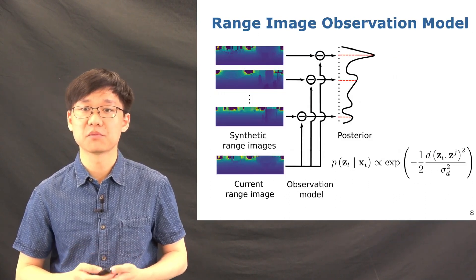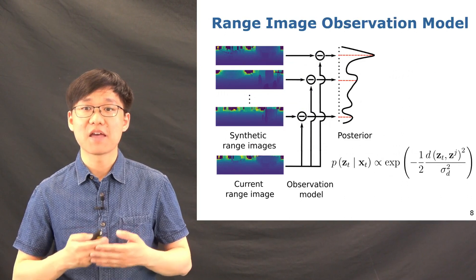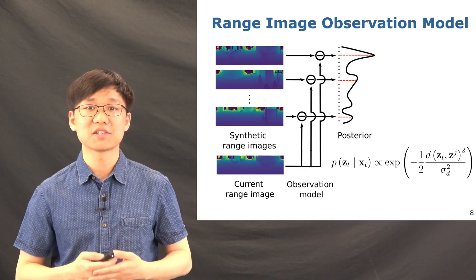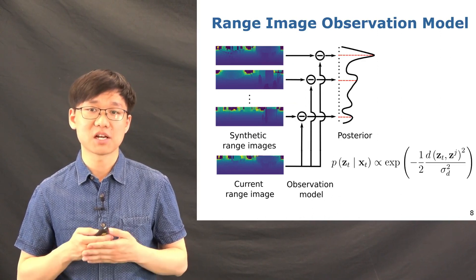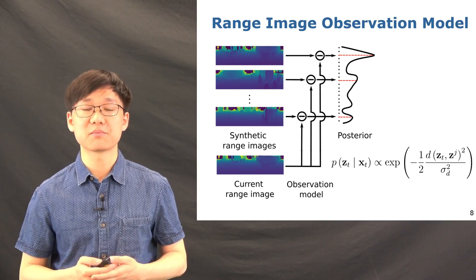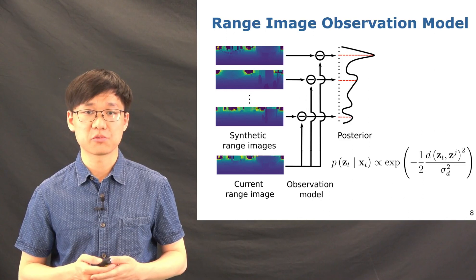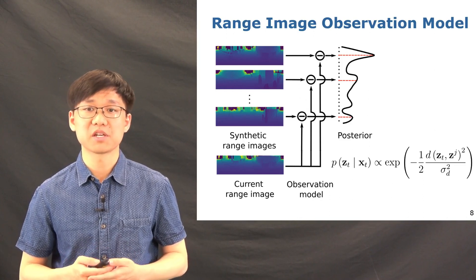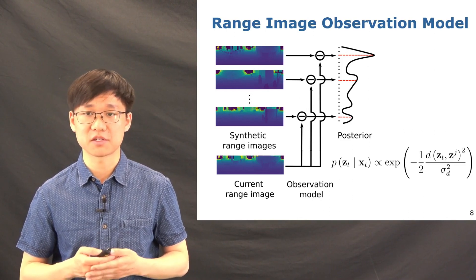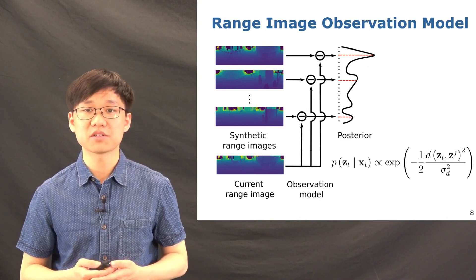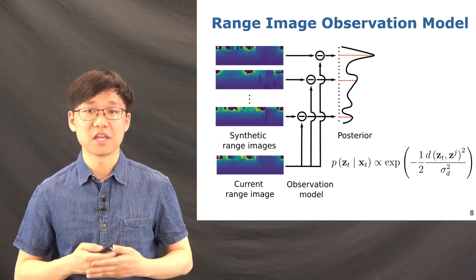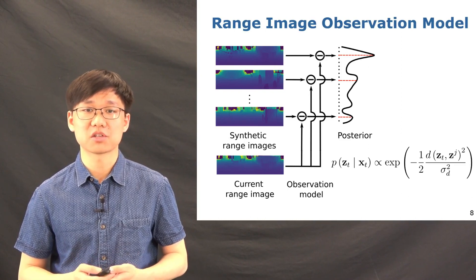After we get the range image from the current LiDAR scans and the rendered synthetic range image for all particles, we can then design an observation model for Monte Carlo localization based on such range images. In this work, we use a very simple absolute difference-based model with a Gaussian distribution to describe the similarity between the current range image and the rendered synthetic range image for each particle hypothesis. Based on such similarities, we can then update the importance weight of the corresponding particle and in the end get the posterior estimation of the robot pose.